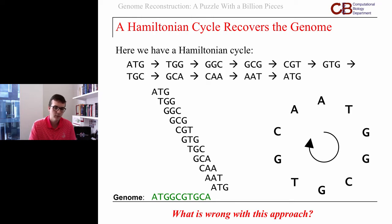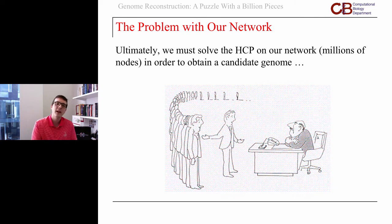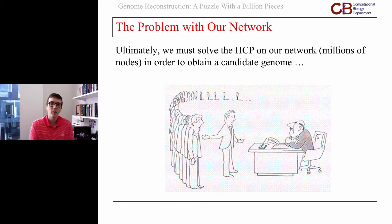There's one critical issue. Think about how big this network is going to be if we have millions or close to a billion reads — we're going to have an enormous network. And we're looking for a Hamiltonian cycle in that network, which means we need to solve the Hamiltonian cycle problem on that network to obtain a candidate genome. That brings us back to the issue that even though the Hamiltonian cycle problem seems very similar to the Eulerian cycle problem, we don't have an efficient algorithm for solving it. So if we model our problem as a Hamiltonian cycle problem, we're going to get stuck.